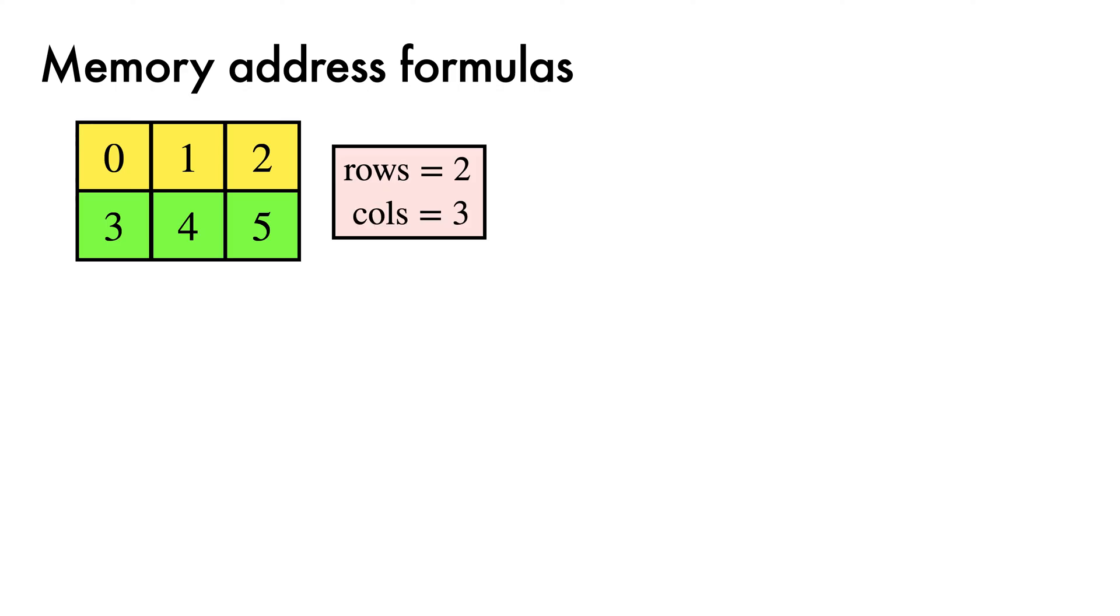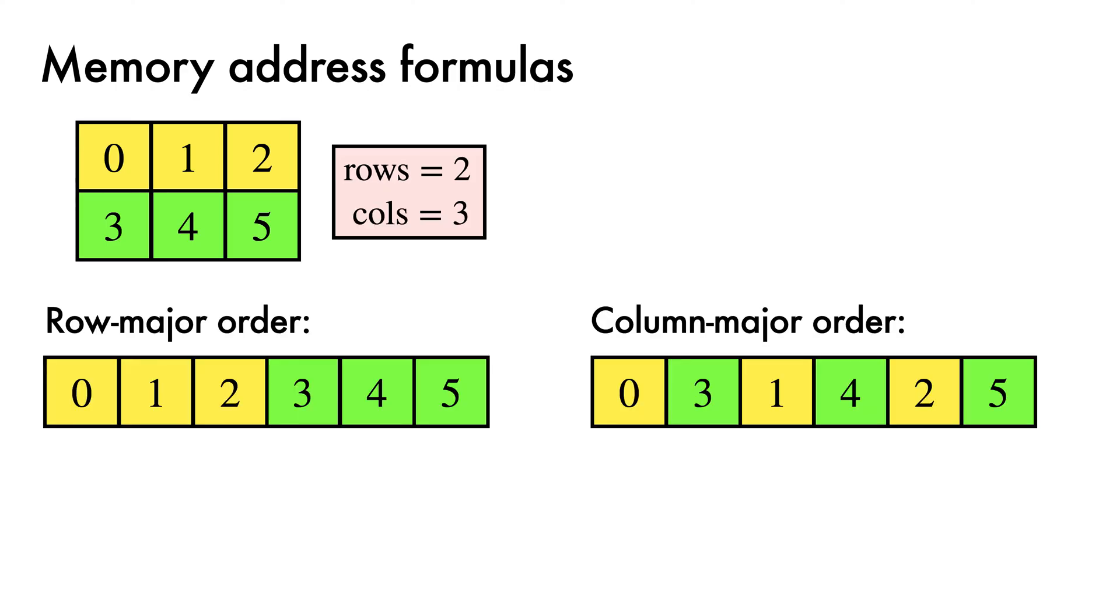When working with these storage orders, we'd like to be able to translate between each position in our matrix, which has two rows and three columns, and its corresponding location in memory for either kind of storage order. Looking at the position containing the value 3 for example, we can see that it appears at index 3 if the data was stored in row major order, but index 1 if the matrix was stored in column major order. Thankfully, the formulas for these mappings are intuitive.